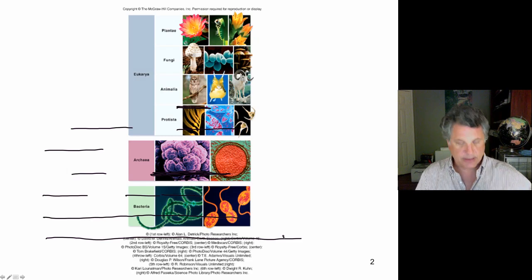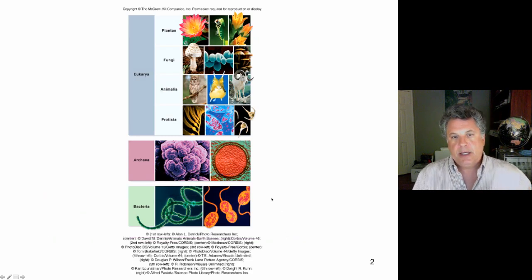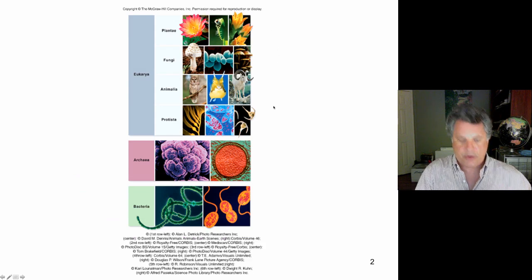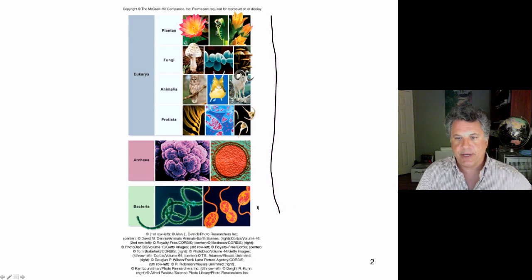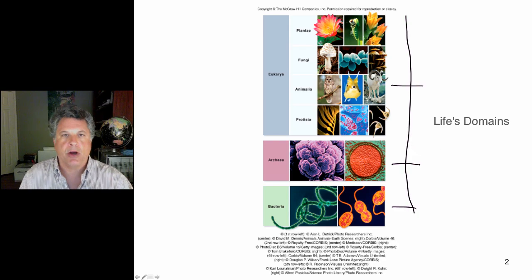And if we look at the three major domains of living forms on Earth, this is what we see. We have the bacteria, we have the archaea, and we have the eukaryotes to which we belong.